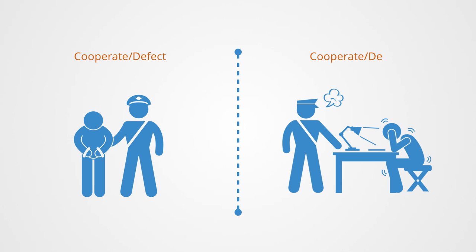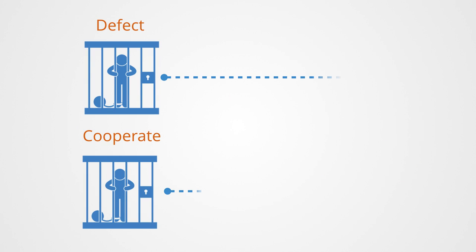They are interrogated simultaneously and offered deals in the form of lighter jail sentences for betraying the other criminal. They then have the option to cooperate with the other prisoner by not telling on them, or defect by betraying the other. However, if both players defect, then they will both serve a longer sentence than if neither said anything. Lower jail sentences are here interpreted as higher payoffs.